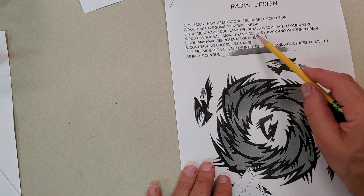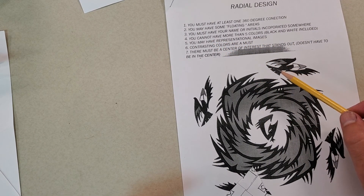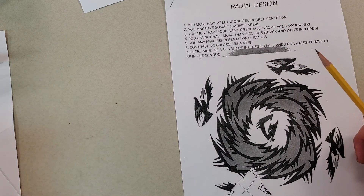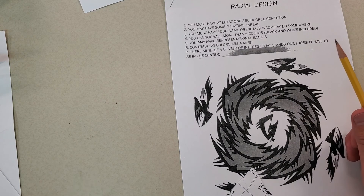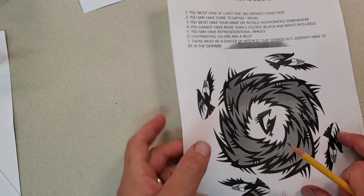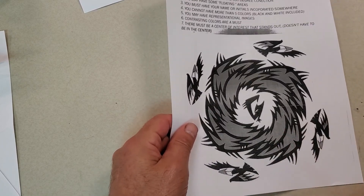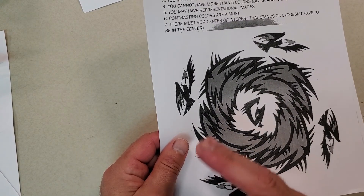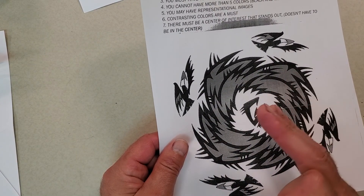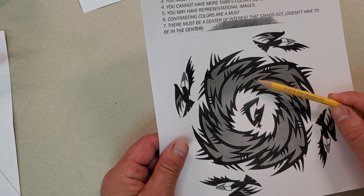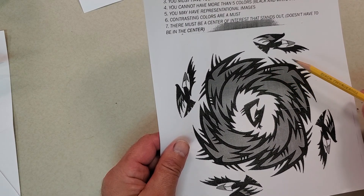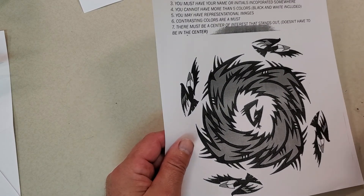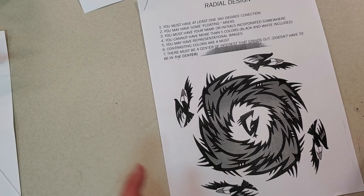You cannot have more than five colors. Black and white are included, so if you use black and white, you can have three more colors. You can have gradients of colors though. This is printed in black and white but it's got some gradients of yellow — it goes from light yellow to dark yellow — and it's got gradients from dark red to light red. I'd consider those one color when you have a gradient.